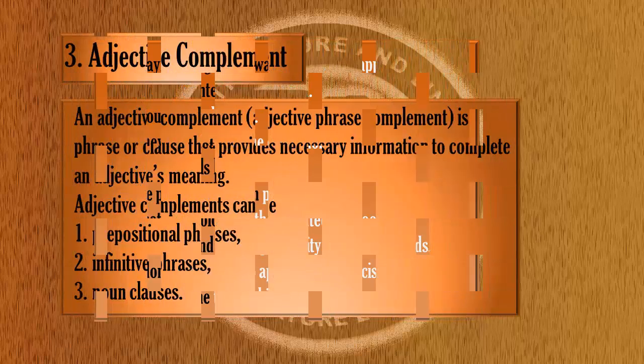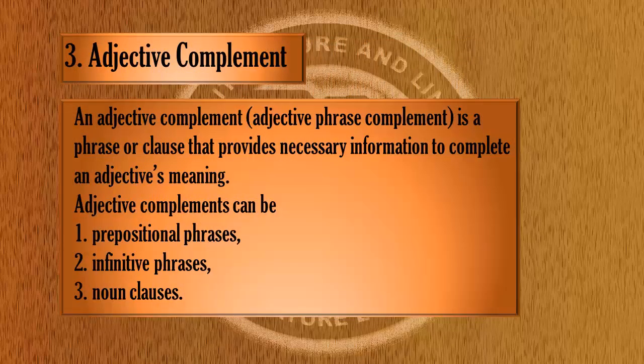The next topic is adjective complement. An adjective complement is a phrase or clause that provides necessary information to complete an adjective's meaning. Adjective complements can be prepositional phrases, infinitive phrases, or noun clauses.